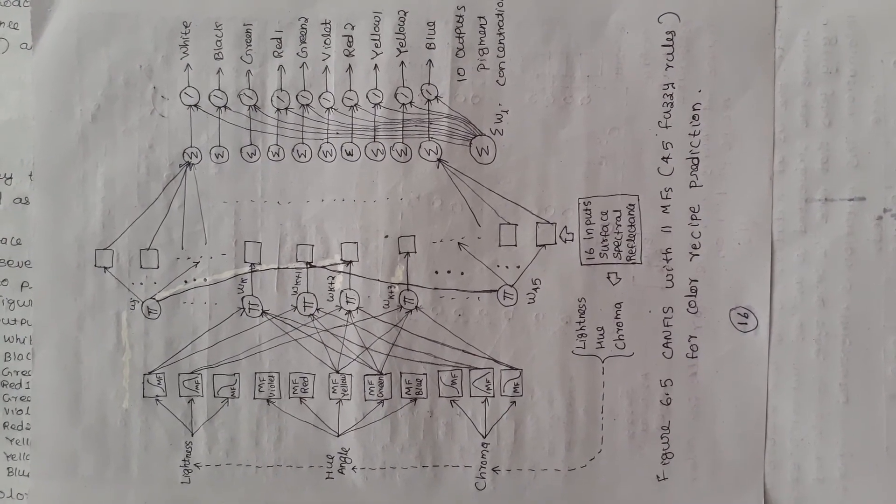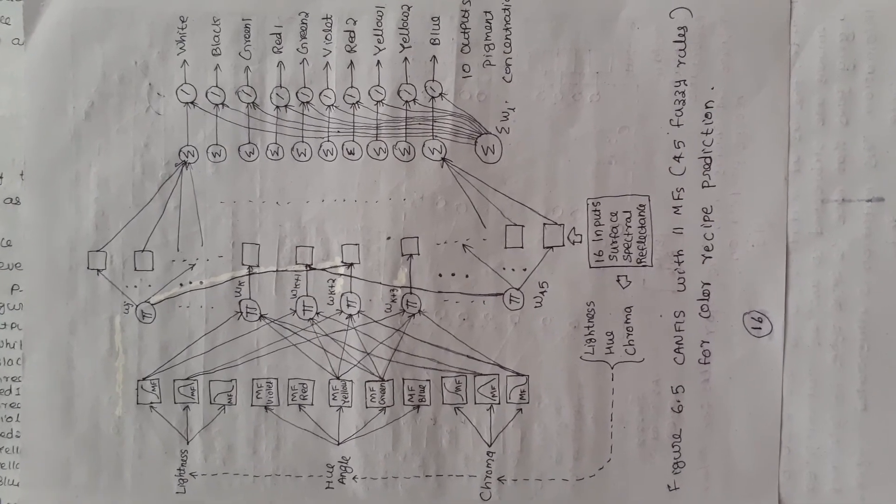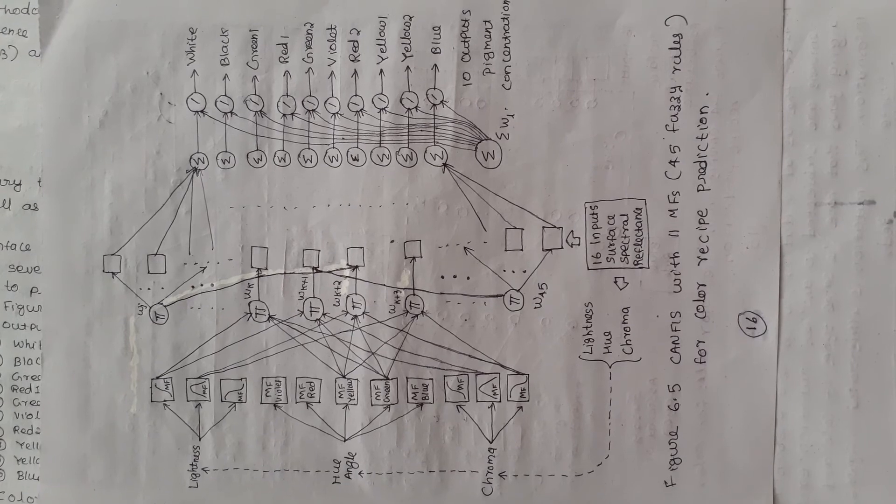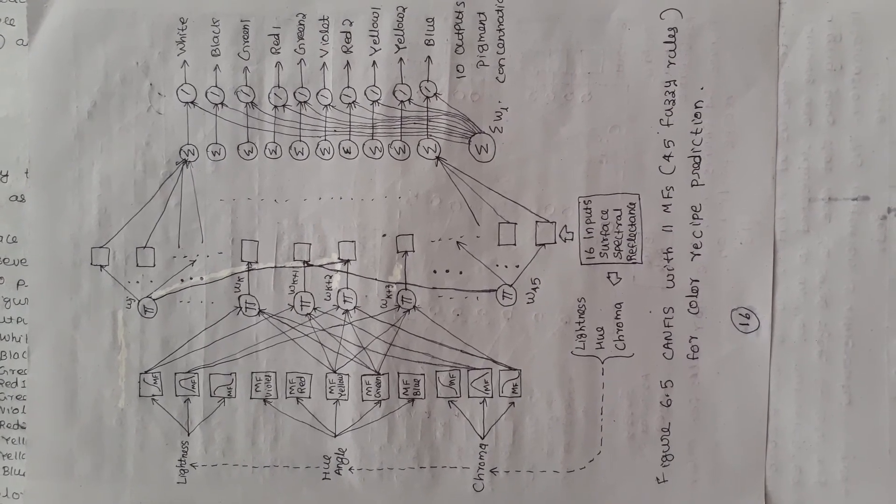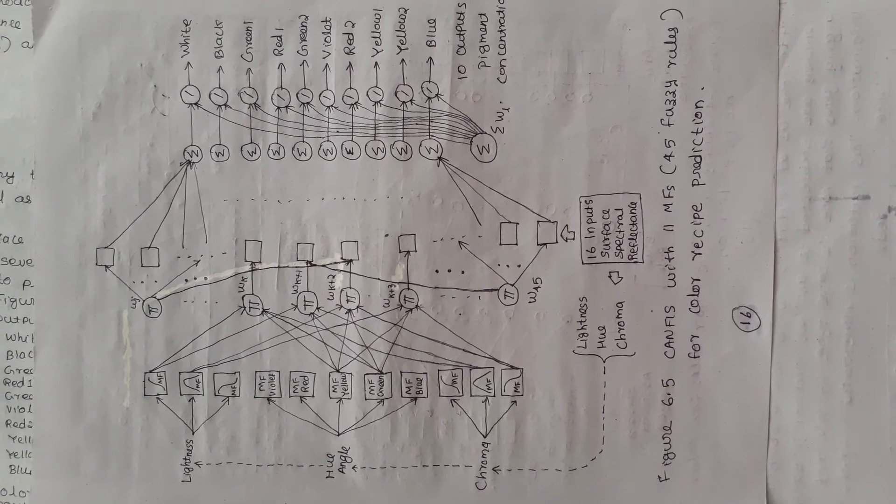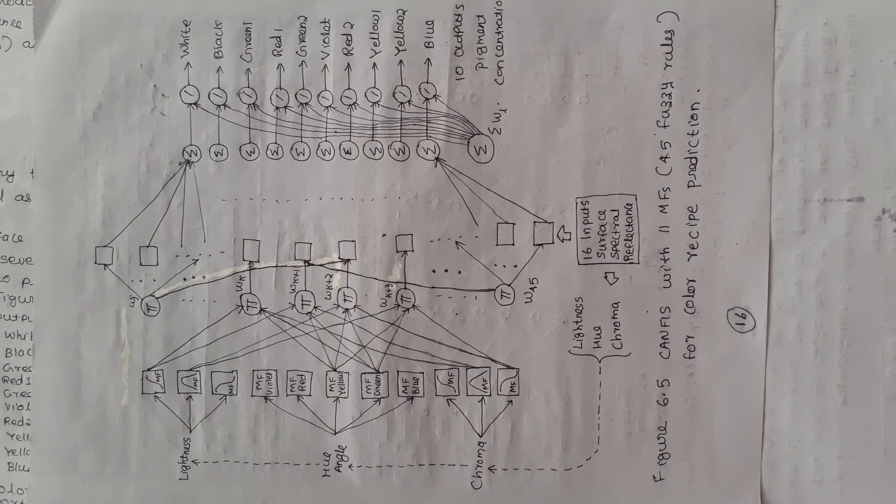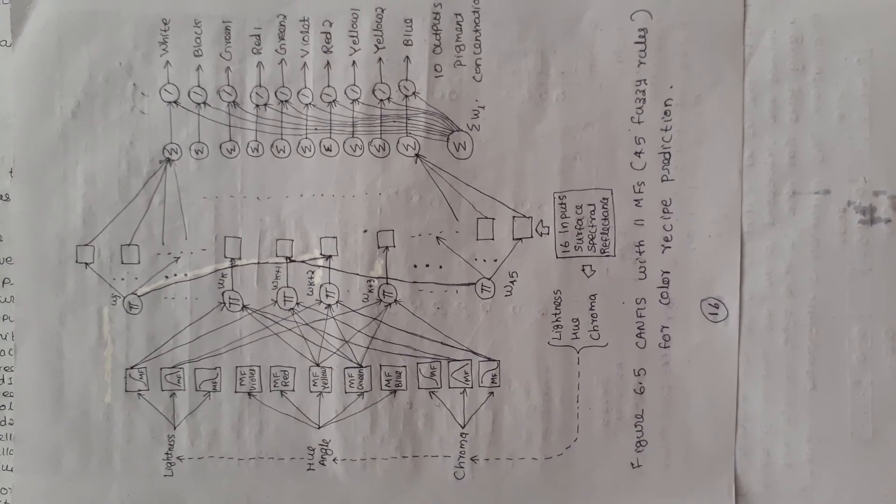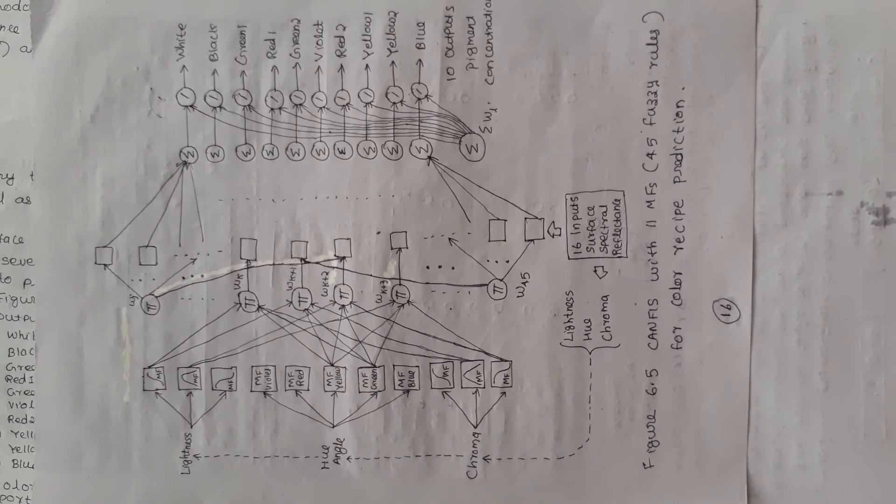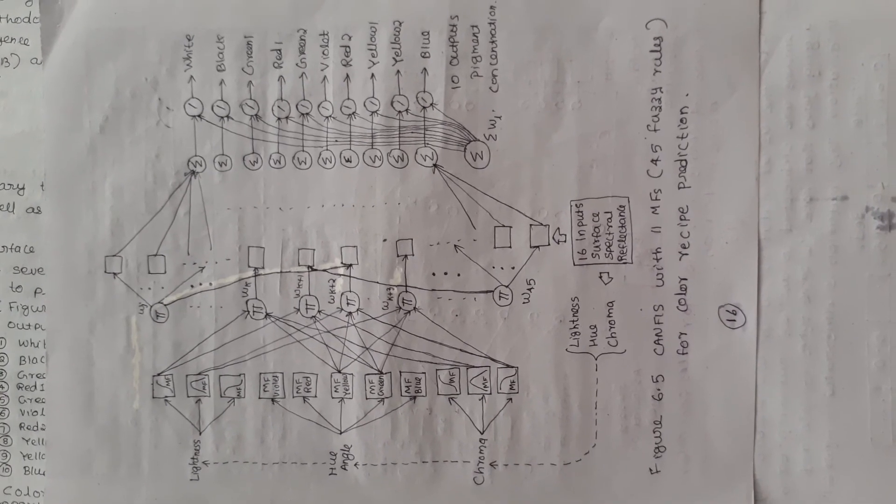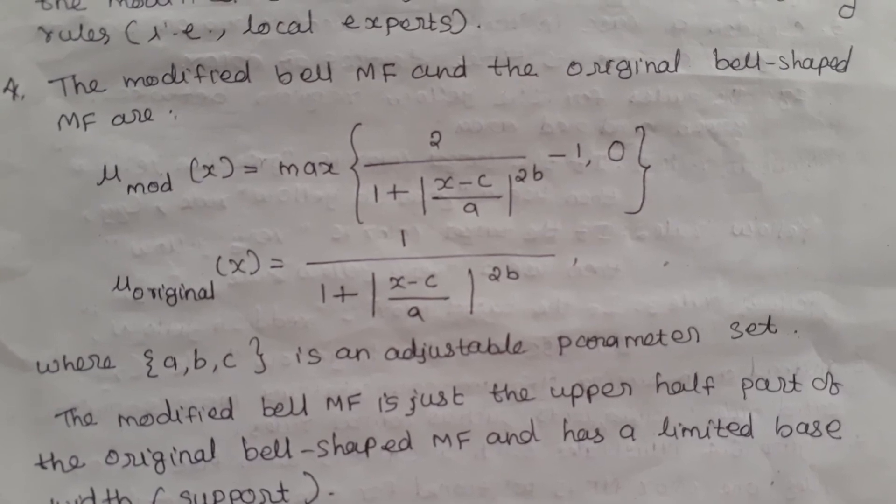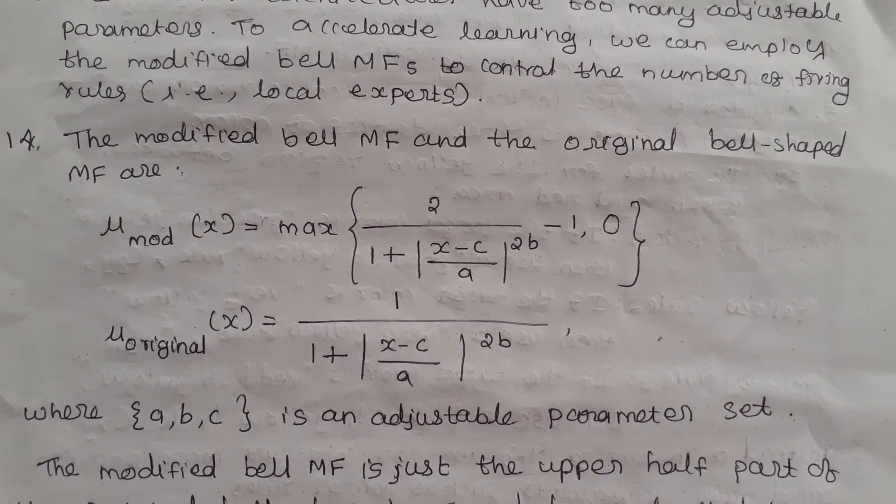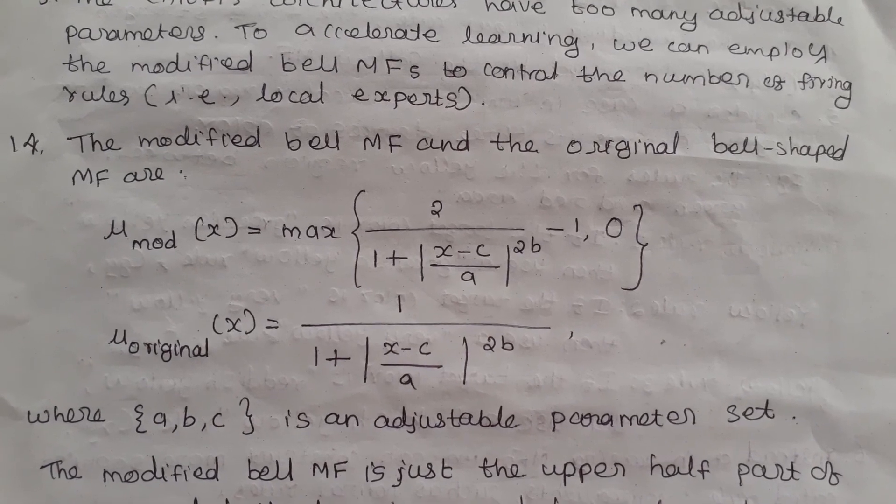The canvas with 45 fuzzy rules is illustrated in Figure 6.5. The canvas architectures have too many adjustable parameters. To accelerate learning, we can employ the modified bell membership functions to control the number of firing rules.